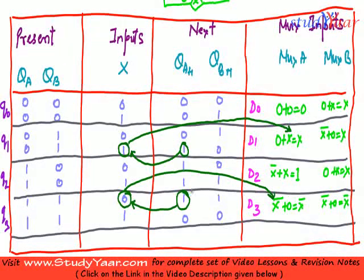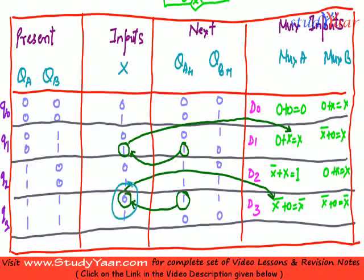Similarly over here, you are looking at a high entry. You look at the corresponding x value which is 0, and x is equal to 0 in min-term notation is x bar. So that's how you do it.